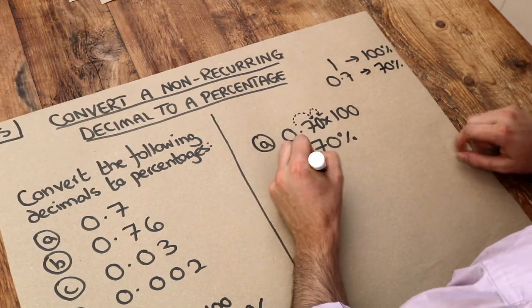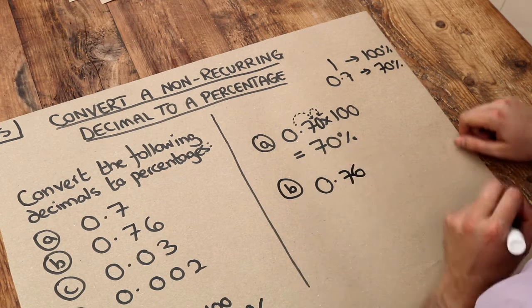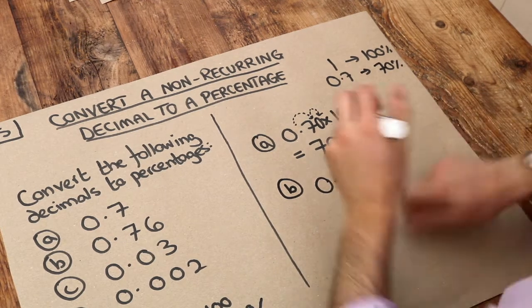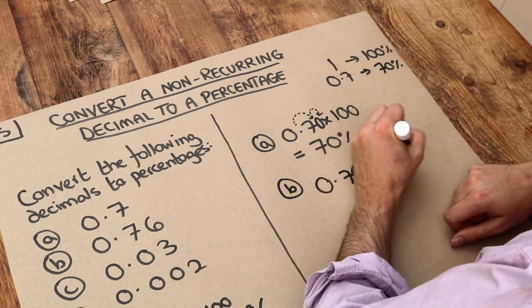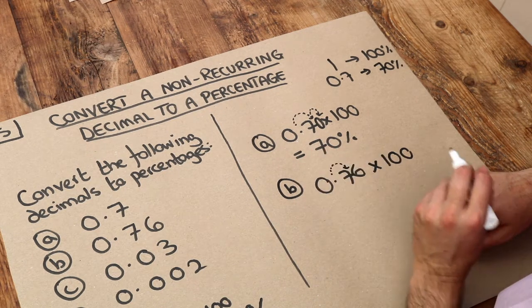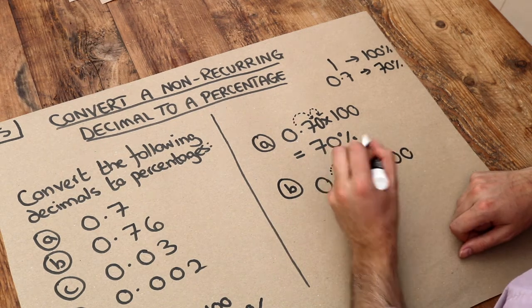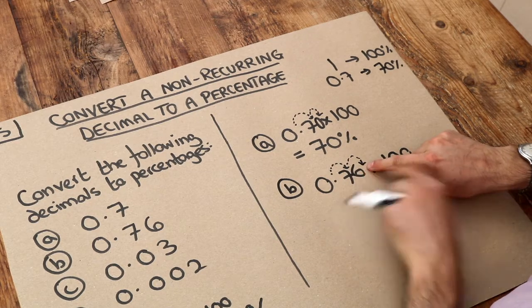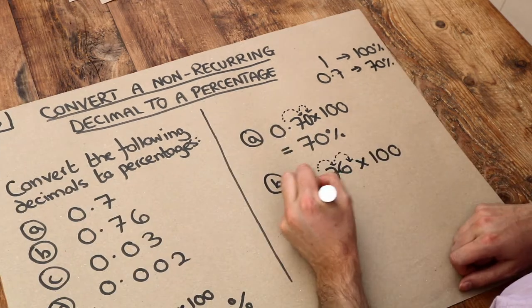What about the next one? 0.76, to convert that to a percentage, we just times by 100. And that one's slightly easier because we've got enough digits this time. Move it once, move it twice. We've got 76 with a decimal point on the end. So that's just 76%.